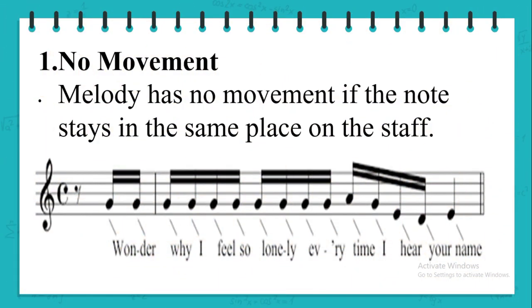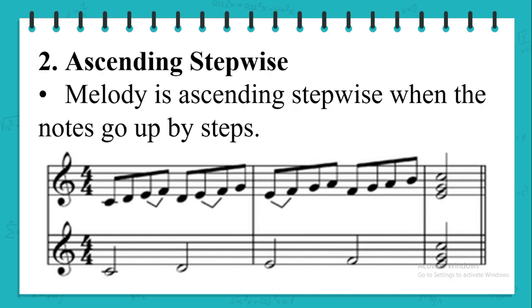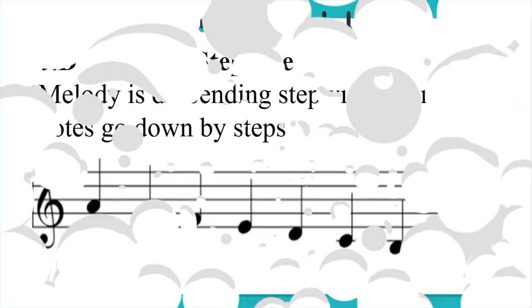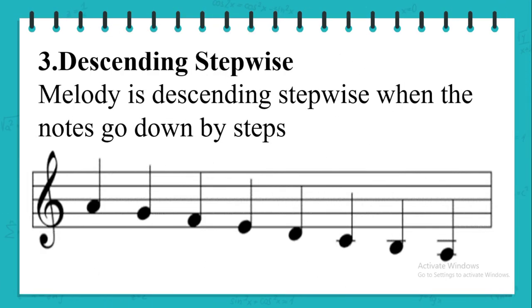What are the movements of melody? 1. No movement: melody has no movement if the note stays in the same place on the staff. 2. Ascending stepwise: melody is ascending stepwise when the notes go up by steps. 3. Descending stepwise: melody is descending stepwise when the notes go down by steps.